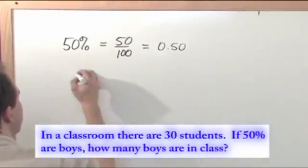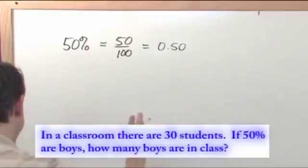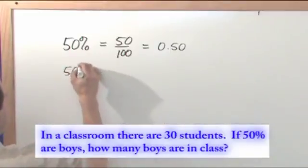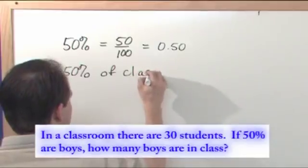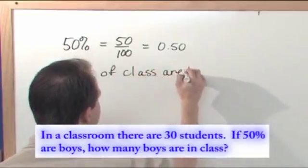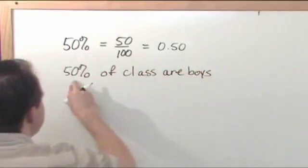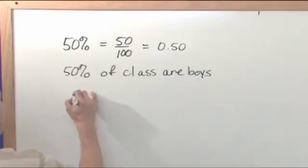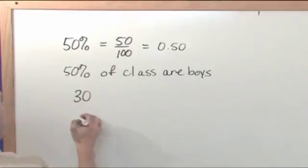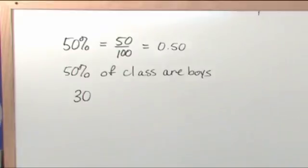The problem says 50% of the class are boys. This 50% of, of is usually a keyword for multiplication and in this case it is too. So what we're going to have is 30 people in class and we're going to multiply it by the 50% because 50% is telling us how many people in the class are actually boys in terms of percent.